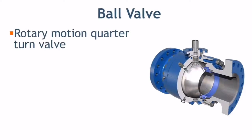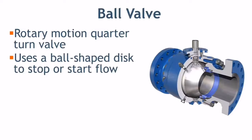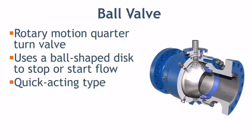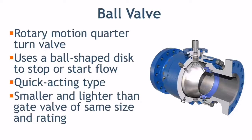Ball valve is a quarter-turn rotary motion valve that uses a ball-shaped disk to stop or start the flow. Most ball valves are of the quick-acting type which require a 90-degree turn of the valve handle to operate the valve. The ball valve is smaller and lighter than a gate valve of the same size and rating.